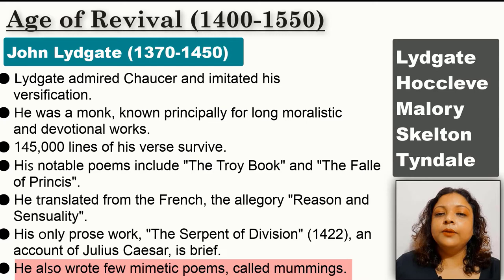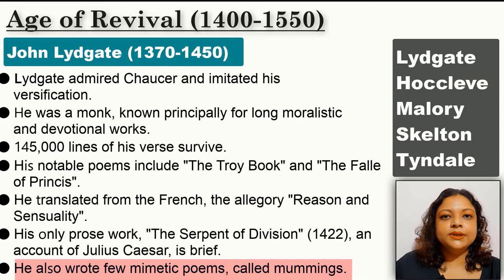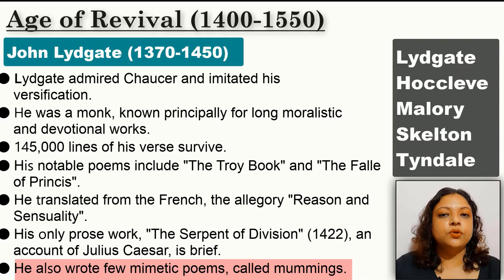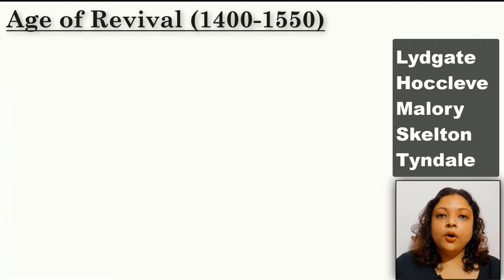Mummings were folk plays popular in Europe — more popular in England, Scotland, and Ireland — featuring elements of music, sword fighting, dance, and episodes involving death and revival of a person. Although Lydgate admired Chaucer and wanted to imitate his high style, his agenda was completely different: he was very religious and keen on writing devotional pieces, and more interested in writing for noblemen, whereas Chaucer was more interested in writing for common people. Therefore there is a remarkable difference between Chaucer and Lydgate, although the latter wanted to follow the former.